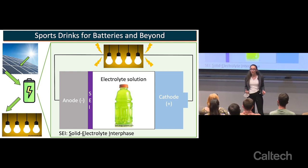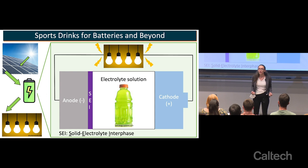If we want to use solar power at night or wind power on a calm day, we need a way to store that energy for later. To do that, we need to develop new and better types of batteries.